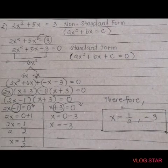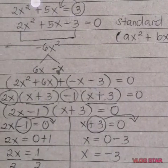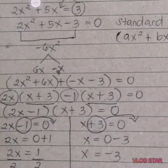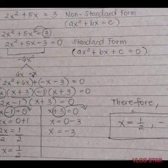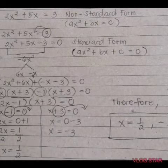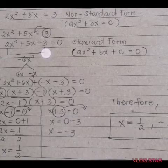Next, we have 2x squared plus 5x equals 3. The given is written in the form ax squared plus bx equals c, which is not yet standard form. In factoring, it should be written in standard form first. So transpose positive 3 to the left side — it becomes negative 3.